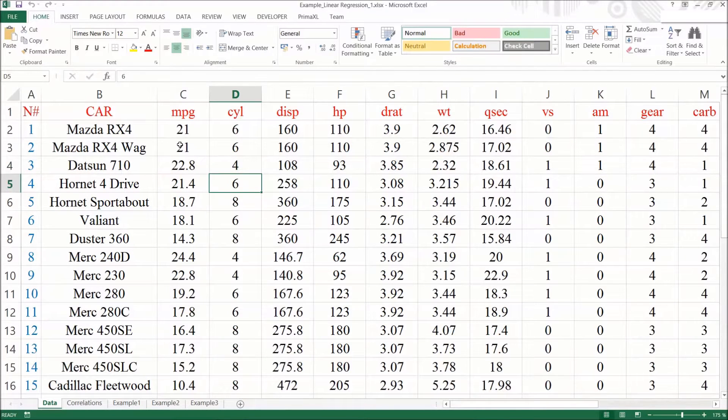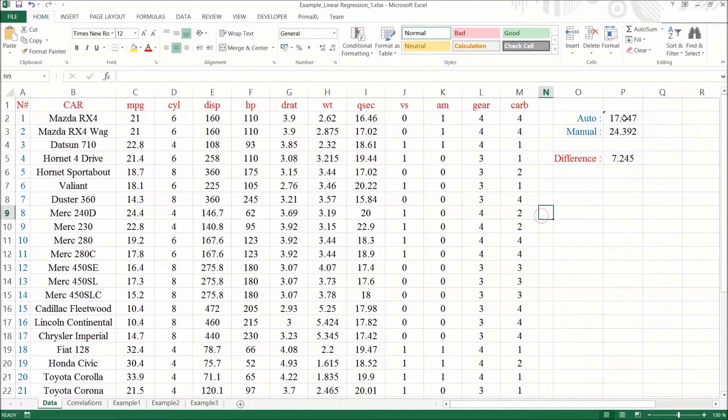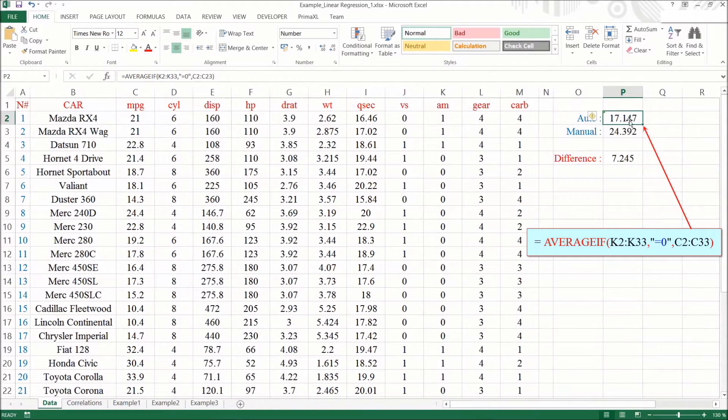We have the data set as we can see here. The columns are named after the variables. These columns correspond to the MPG and 10 other features. The simplest thing we can do would be to calculate the group averages. In order to do so, we'll use the Excel spreadsheet function average if. The syntax is as shown here. The first argument is the set range of the variable AM. The second argument is the condition. For example, it is equal to zero for the group average of the automatic transmission.